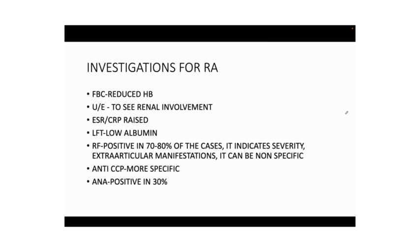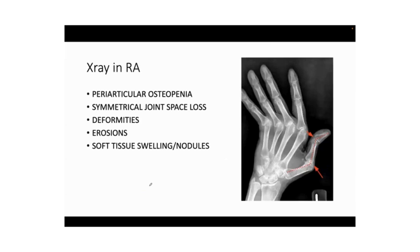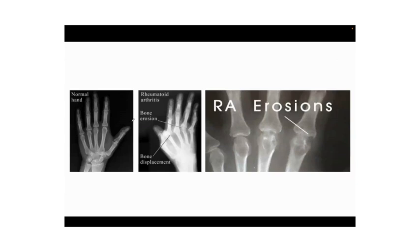For investigations, always justify each test. Full blood count will show reduced haemoglobin. Urea and electrolytes to check for renal involvement. ESR and CRP. LFTs show low albumin. Rheumatoid factor is positive in 70–80% of cases and indicates severity with more extra-articular manifestations. Anti-CCP is more specific. ANA is positive in above 30% of patients. On X-ray, look for periarticular osteopenia, symmetrical joint space loss, deformities, erosions, and soft tissue swelling.